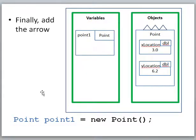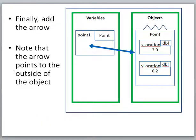And we're going to add the arrow so that that points at the object we just created. So there's our arrow. And very important note that this arrow is pointing at the outside of this point object, right? We're trying to say this thing here is this whole object. It's not just the x location or just the y location. It's the whole object.